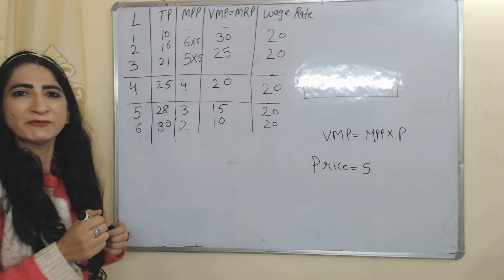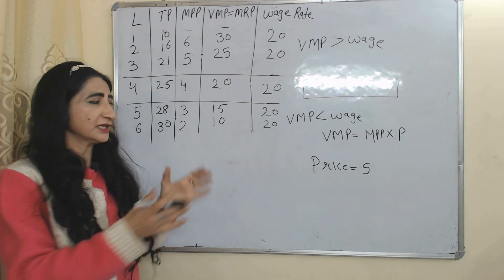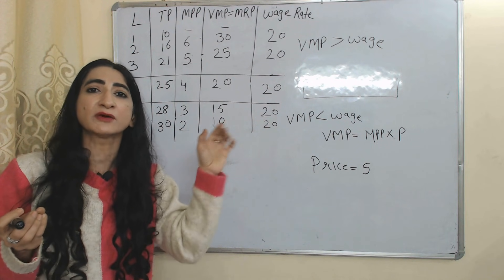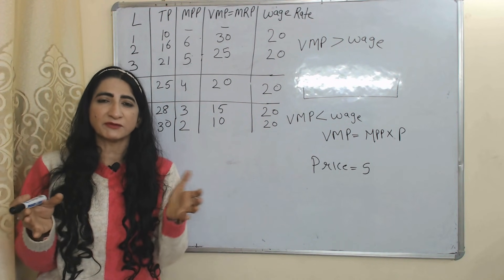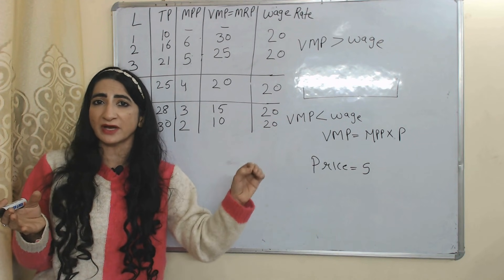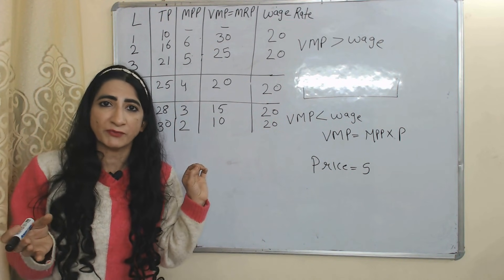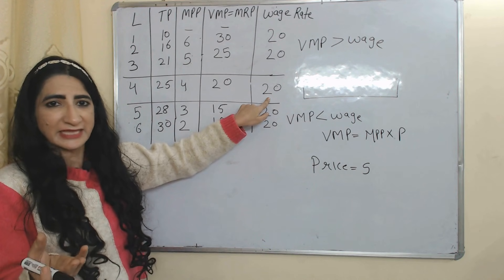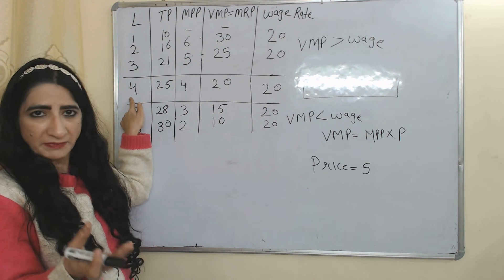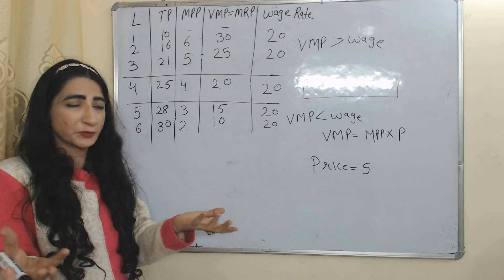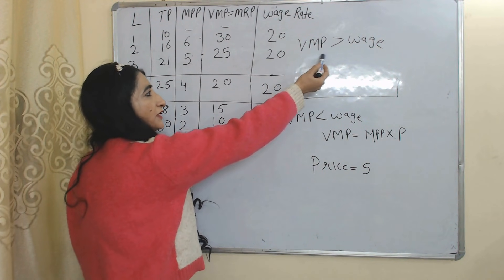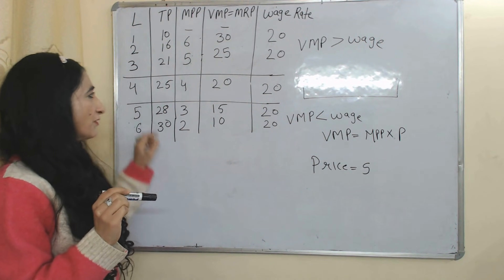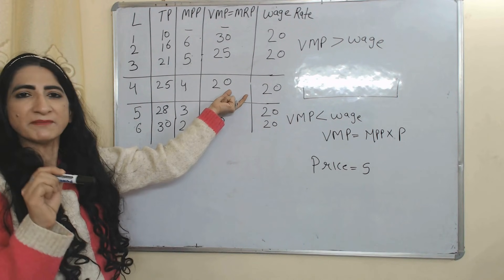The last column has the wage rate. According to this theory, a firm will hire labor up to the point where the VMP of labor becomes equal to the wage rate. At 4 units of labor, you can see VMP of labor is equal to the wage rate, so the firm will hire only four units of labor because it gives the maximum output. Before this point, VMP is more than wages, and beyond this point VMP is less than wages.